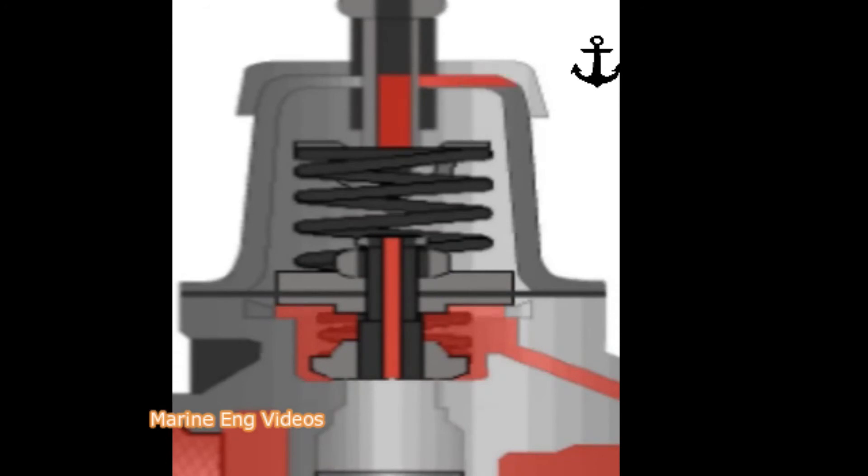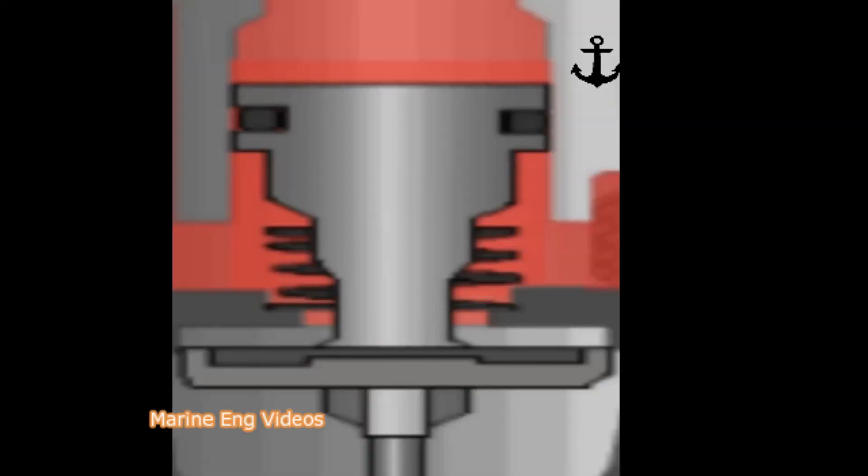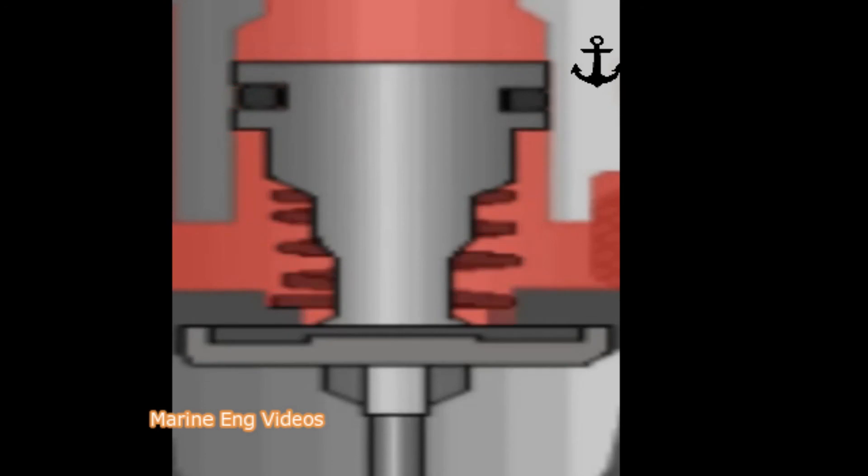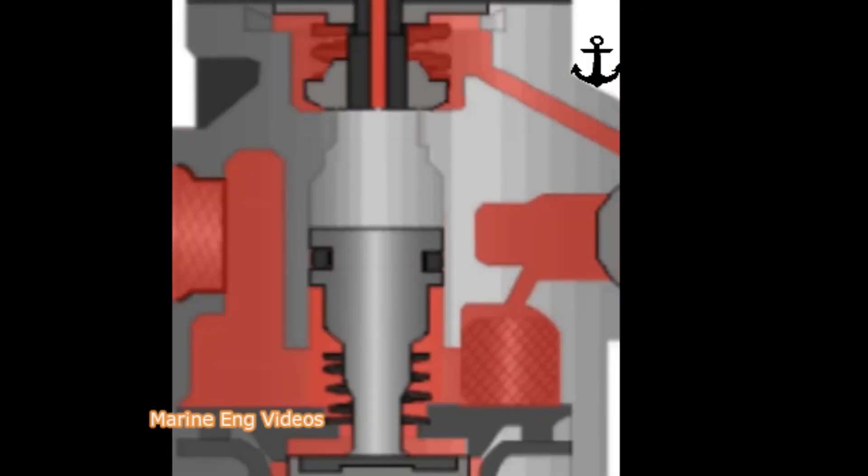to open and exhaust the trapped air above the unloader plunger through the top cover. With no air pressure above, the unloader plunger moves up and the unloader valve closes. Supply to the sensing reservoir resumes.